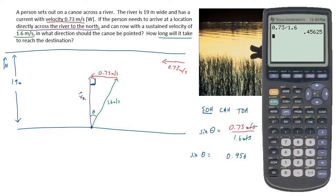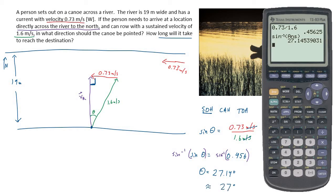Calculating: sin θ = 0.456 (units cancel—meters per second over meters per second). Taking the inverse sine of both sides: θ = inverse sine of 0.456 = 27.14 degrees. Rounding to two significant digits gives 27 degrees. The direction is 27 degrees east of north—that's the direction the canoe should be pointed so the rower works against the current and still lands directly north across the river.